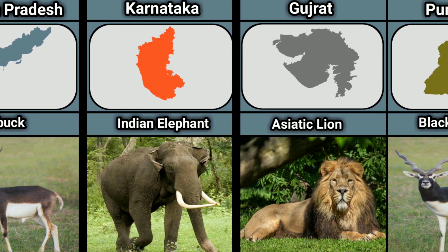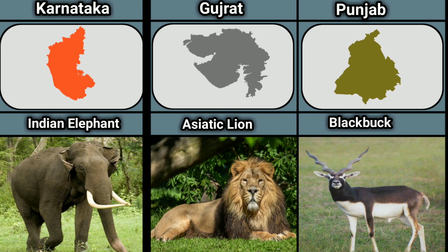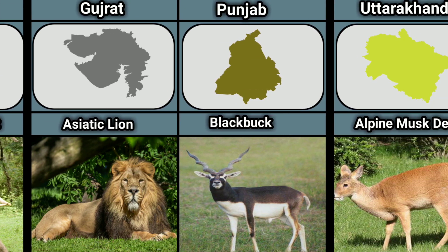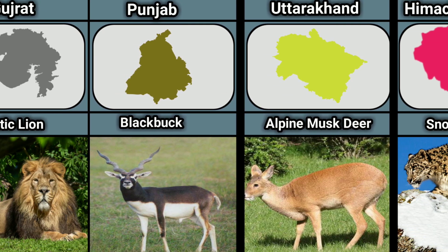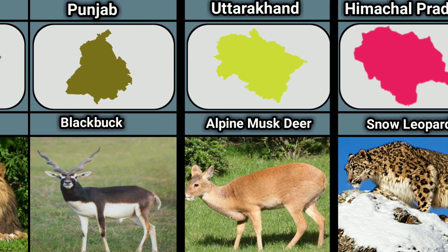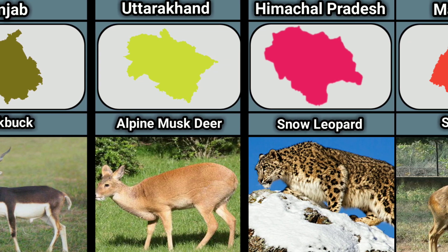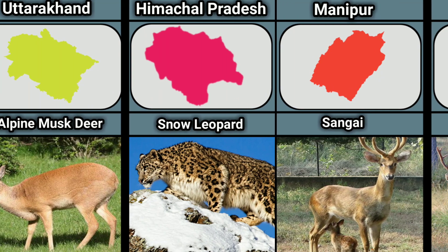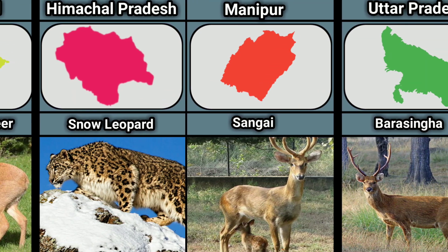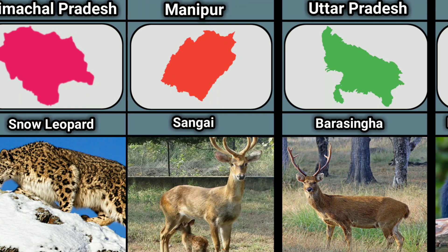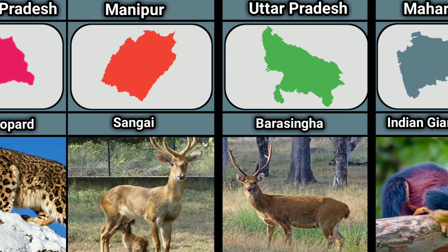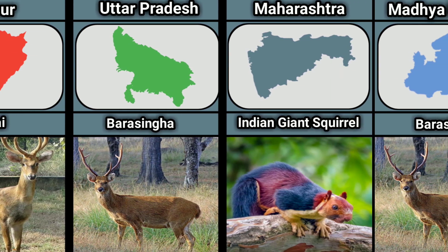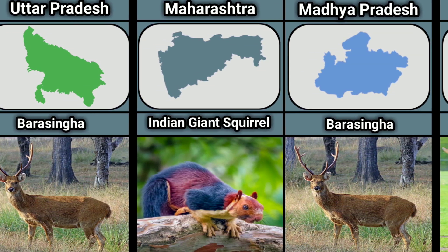Uttarakhand — Musk Deer. Nagaland and Manipur — Sambar Deer and Gayal. Uttar Pradesh — Barasingha. Maharashtra — Indian Giant Squirrel. Nagaland — Gayal.